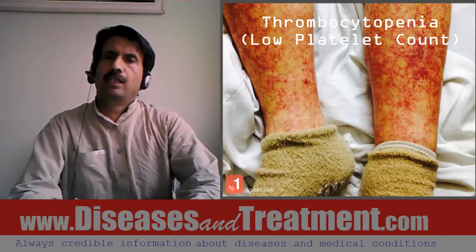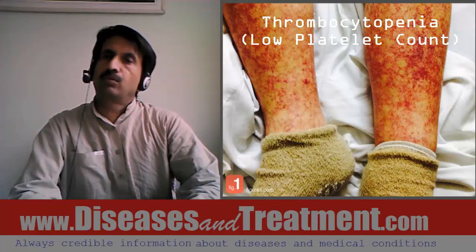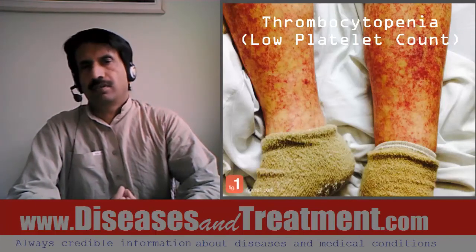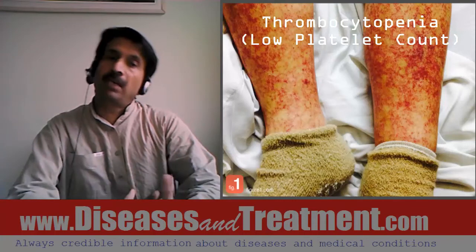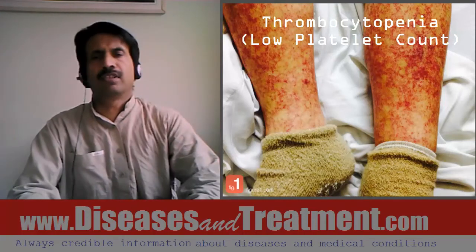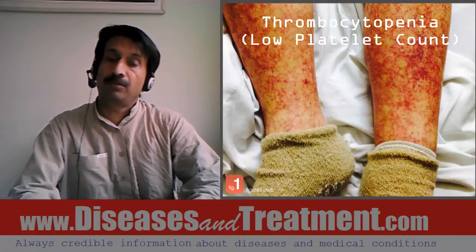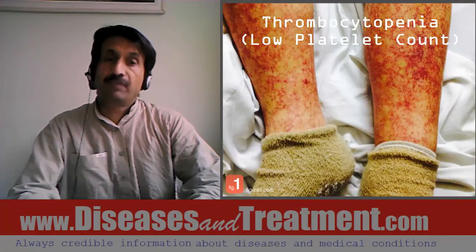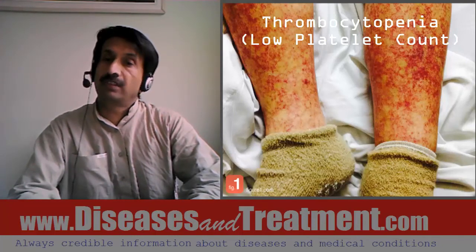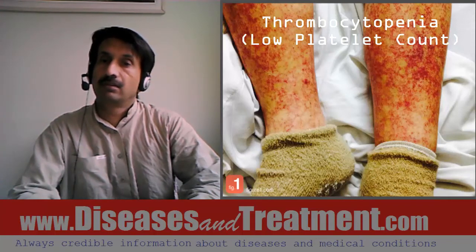Today's topic is a low platelet count, also known as thrombocytopenia. It's a lower than normal number of platelets, which means less than 150,000 platelets per microliter. So if the platelet count is less than 150,000 platelets per microliter, this means it's low.